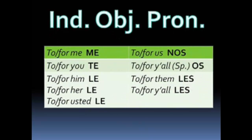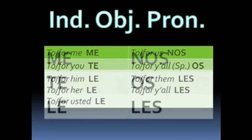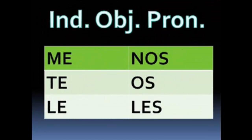Here's a list of the indirect object pronouns in Spanish. 'To or for me' — me. 'To or for you' informal — te. 'To or for him, her, or usted' (formal you) — le. 'To or for us' — nos. 'To or for y'all' informal (used in Spain) — os. 'To or for them or y'all' plural third person — les. So: me, te, le, nos, os, les.